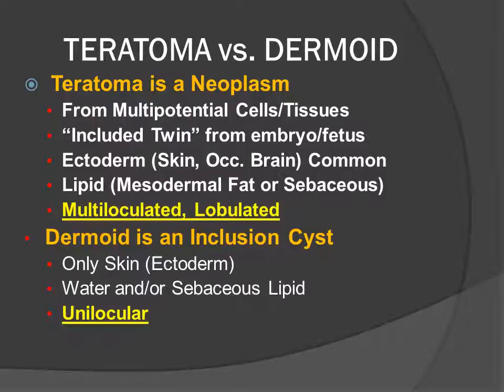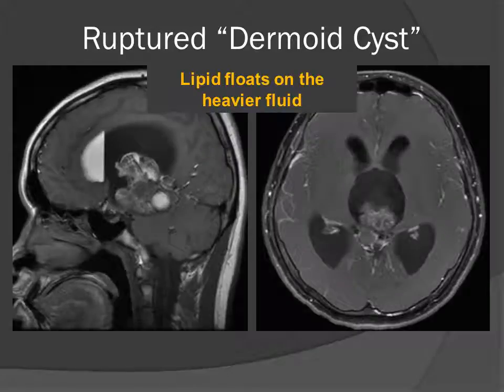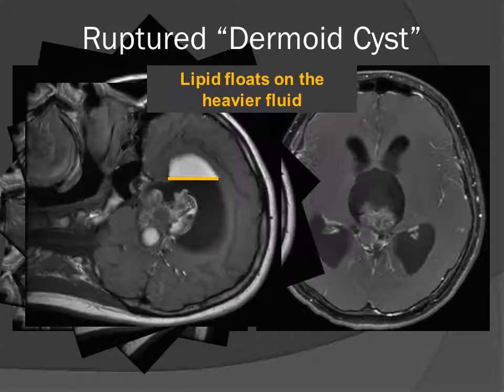Many people are confused about the difference between teratomas and dermoids. The well-known ovarian dermoid cyst is actually a teratoma — a true neoplasm arising from multi-potential cells. The other type of dermoid is an inclusion cyst, representing trapping of surface ectoderm pulled below the surface to form a closed space. The dermoid inclusion cyst is usually unilocular, while the teratoma, which is a neoplasm, is usually multi-locular and very lobulated. Here's an example of a pineal region tumor diagnosed as a dermoid cyst. We can see it is very heterogeneous with significant lipid components and a dense chunk of calcification. The MR scan shows a fat-fluid level, horizontal because the patient is lying supine. Although described as a dermoid cyst, because of the heterogeneity of components, this was most likely a pineal region teratoma.